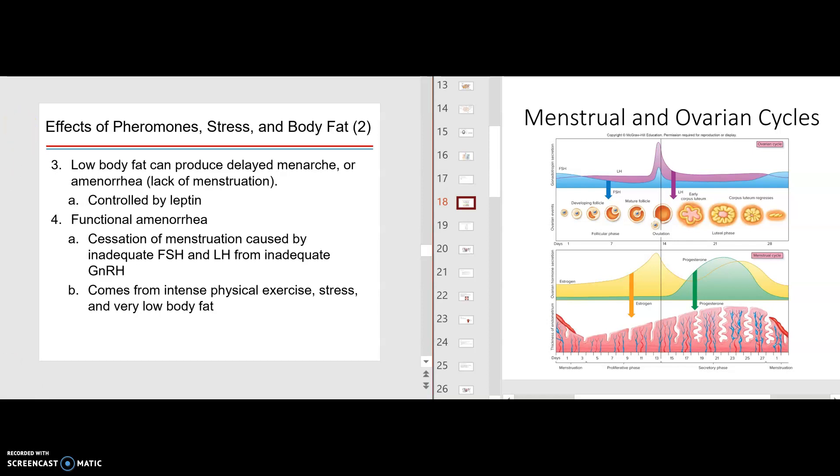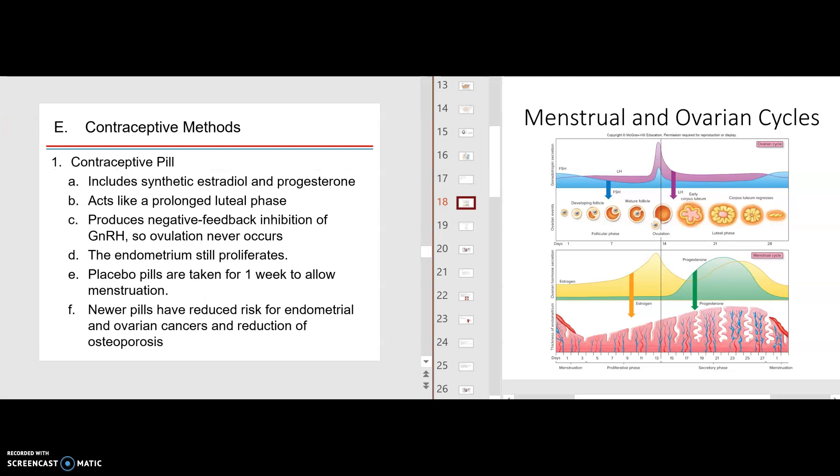Class, let's introduce another topic here, and that's contraceptive measures, contraceptive methods. You have, of course, the birth control pill, and it includes synthetic estrogens and progesterones. What it does, basically, these synthetic estrogens and progesterones inhibit gonadotrophin-releasing hormone factor from the hypothalamus, which really makes the female body think it's pregnant, so there'll be no more ovulation.